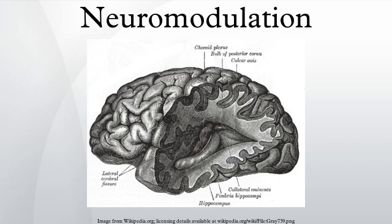Neuromodulation also refers to an emerging class of medical therapies that target the nervous system for restoration of function, relief of pain, or control of symptoms such as tremor seen in movement disorders like Parkinson's disease. The therapies consist primarily of targeted electrical stimulation or infusion of medications into the cerebrospinal fluid, such as baclofen for spasticity. Electrical stimulation devices include deep brain stimulation systems, colloquially referred to as brain pacemakers, spinal cord stimulators implanted using minimally invasive procedures, or transcutaneous electrical nerve stimulation devices which are fully external.